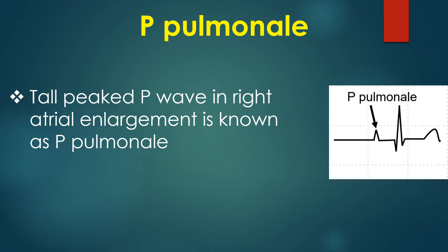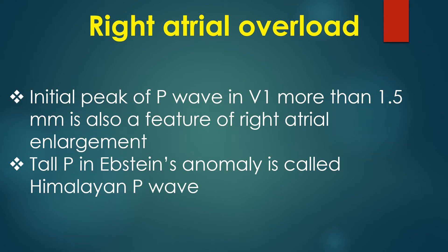A tall peaked P wave in right atrial enlargement is known as P pulmonale, found in cor pulmonale. The tall P wave of right atrial enlargement in congenital heart disease is called P congenital. P wave axis is rightward in P pulmonale while it is leftward in P congenital. An initial peak of the P wave in V1 greater than 1.5 mm is also a feature of right atrial enlargement.